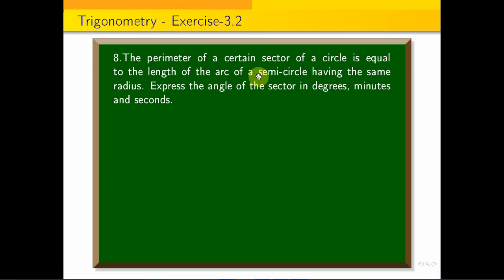What is the problem? The perimeter of a certain sector of a circle is equal to the length of the arc of a semicircle having the same radius. Express the angle of the sector in degrees, minutes, and seconds.